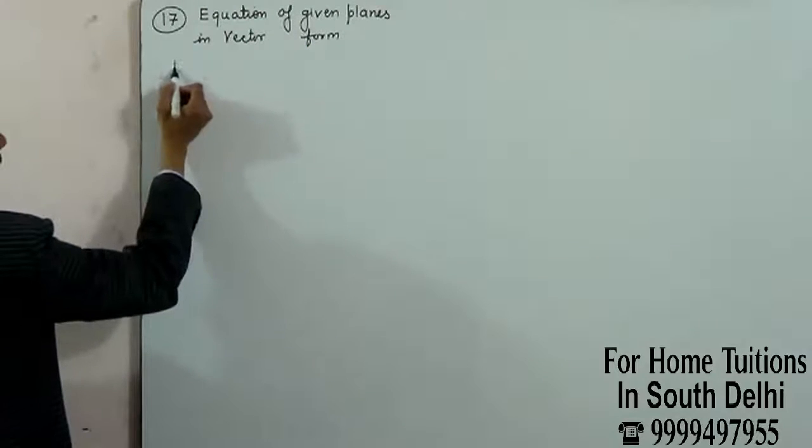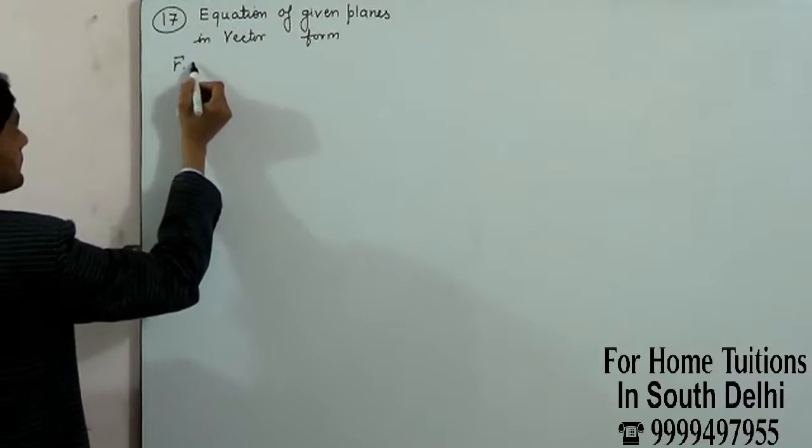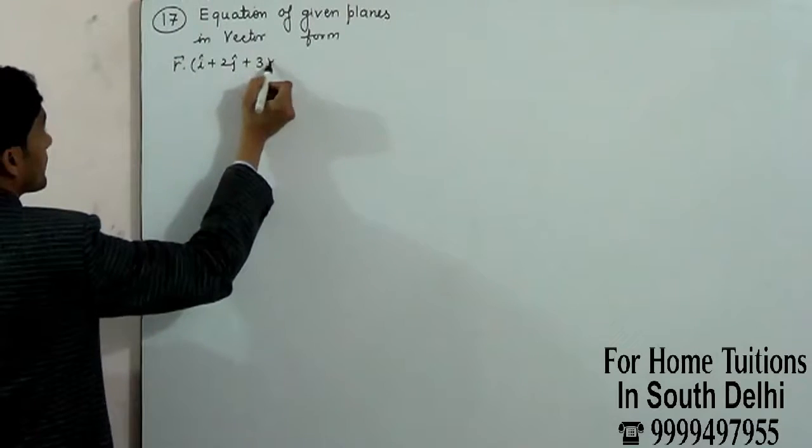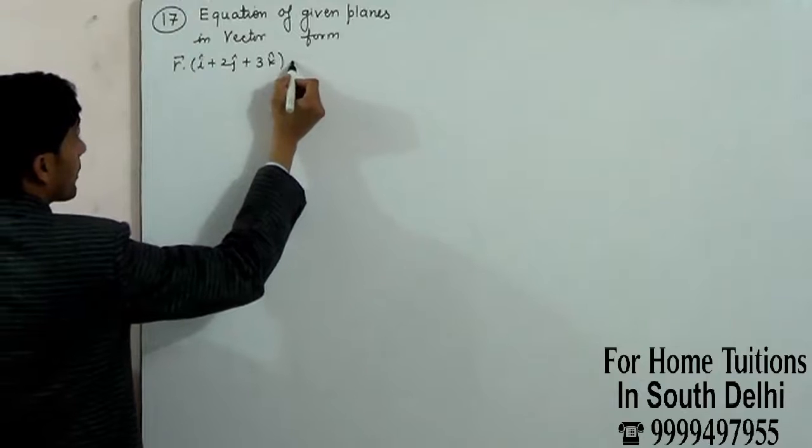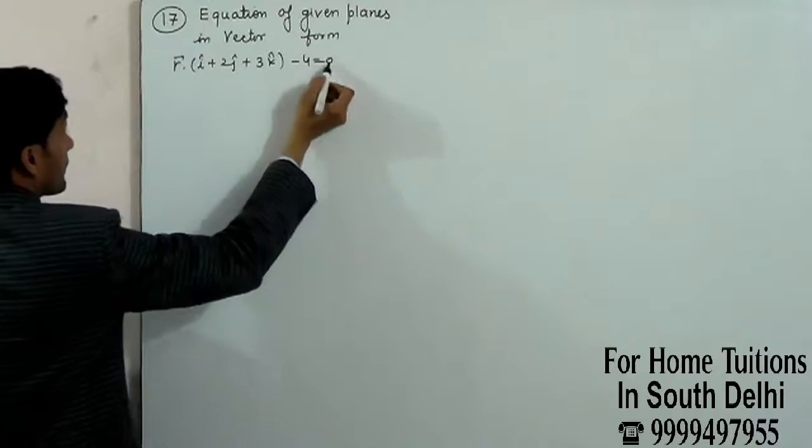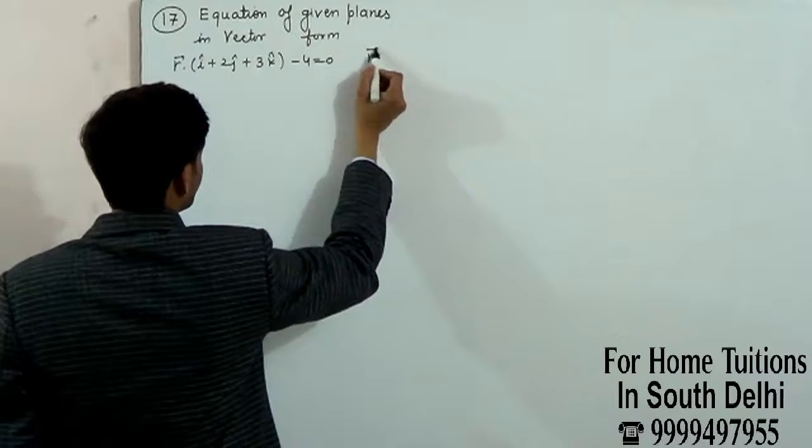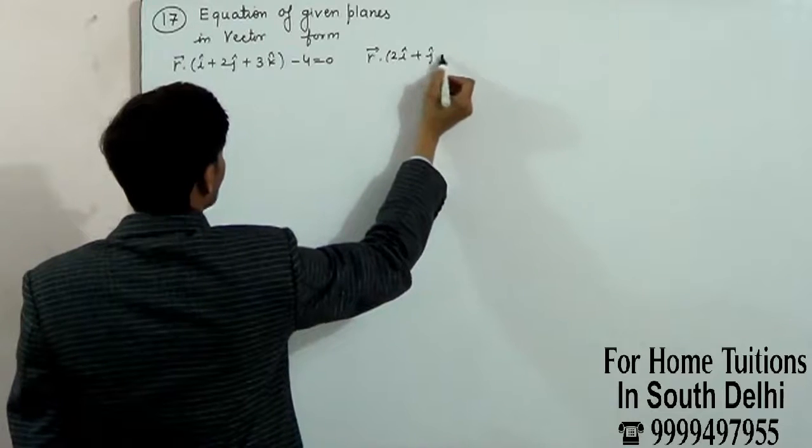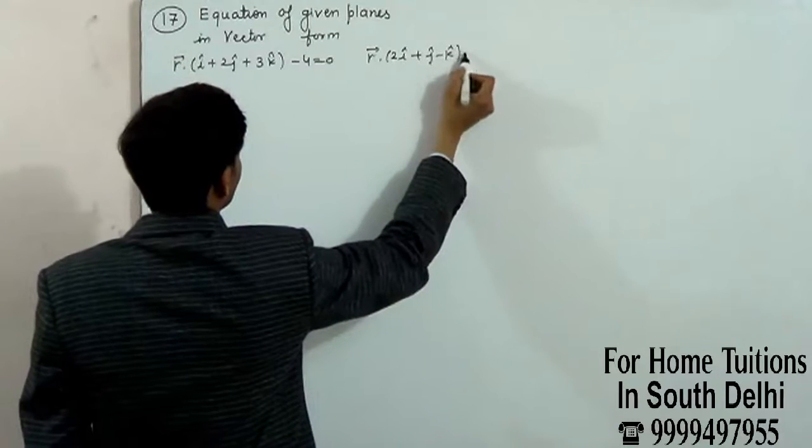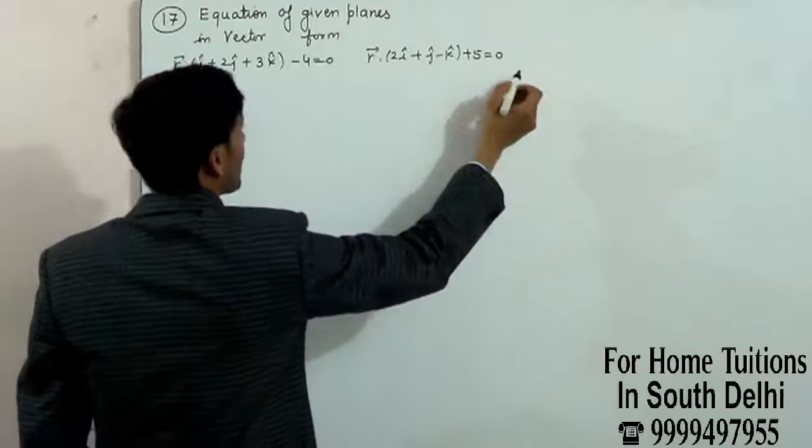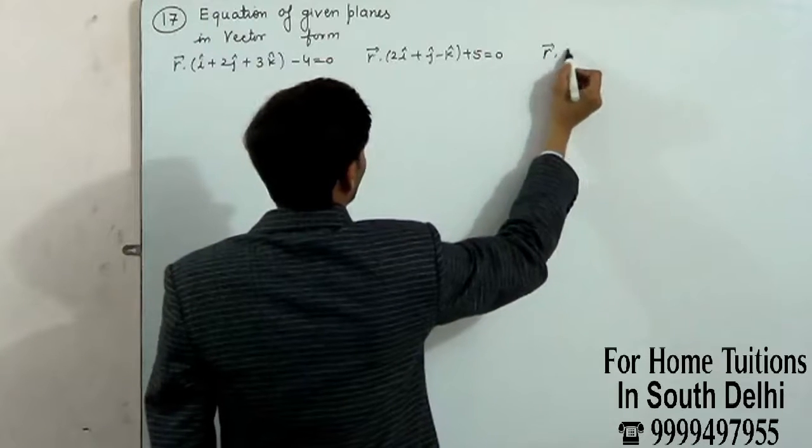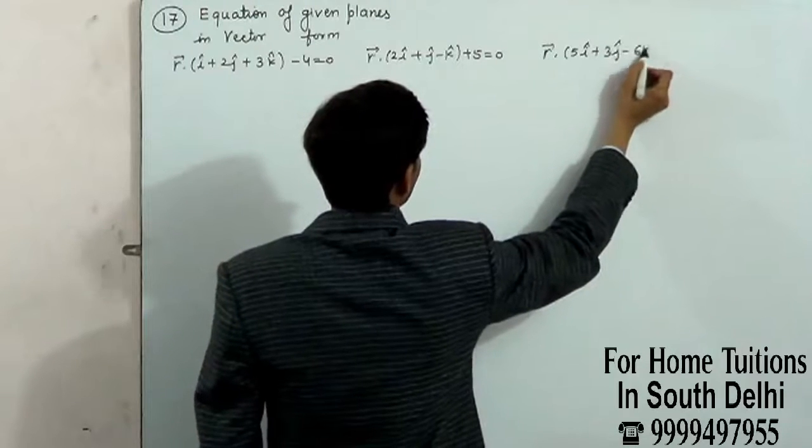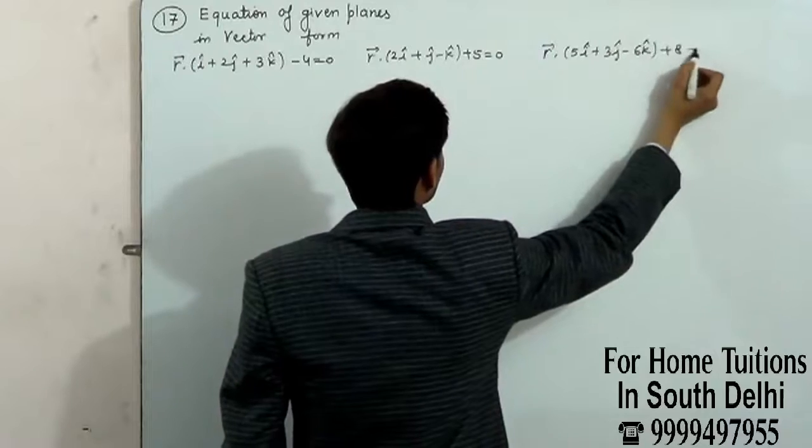R dot (I plus 2J plus 3K) minus 4 equals 0. R dot (I plus J minus K) plus 5 equals 0. R dot (I plus 3J minus 6K) plus 8 equals 0.